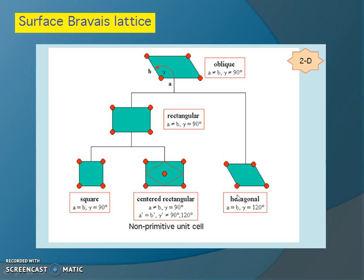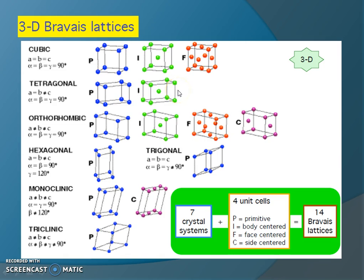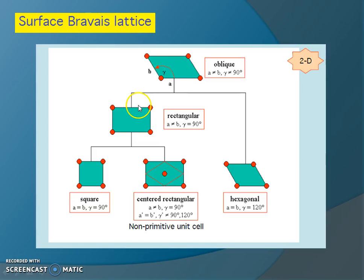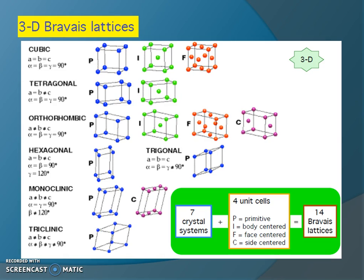Using these parameters, we can find different Bravais lattices for different structures such as rectangular, square, and hexagonal. The centred rectangular lattice is not a primitive lattice because the arrangement of all points is not the same as in a primitive lattice. There are different crystal systems based on different unit cell geometries, including cubic, tetragonal, and hexagonal systems.